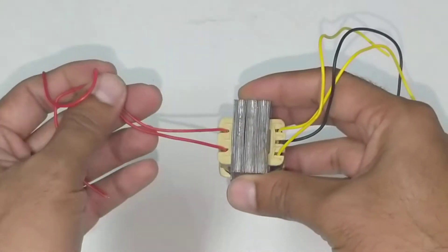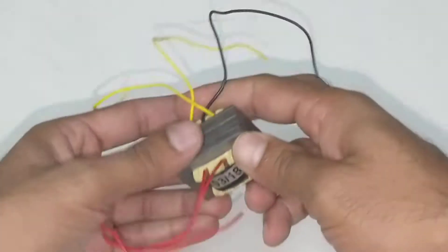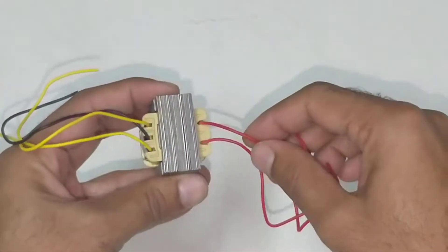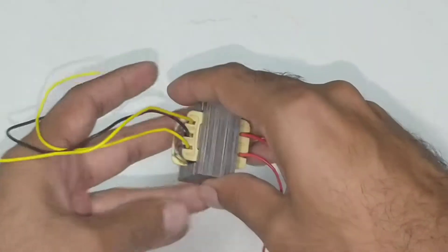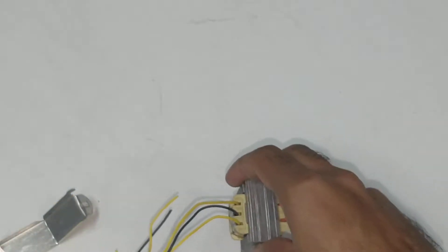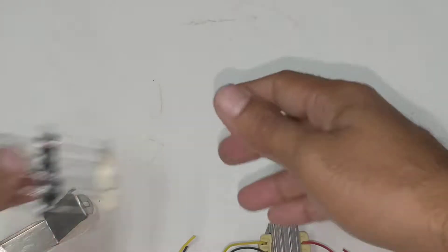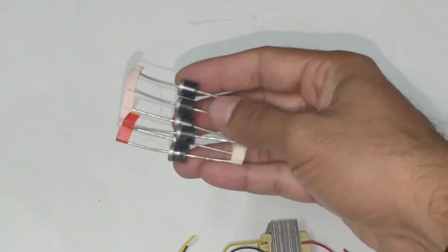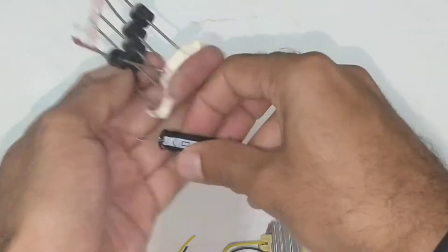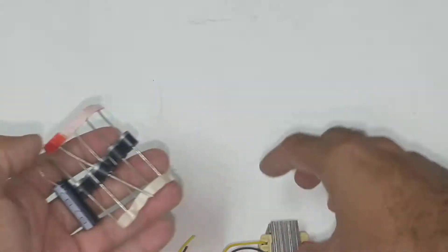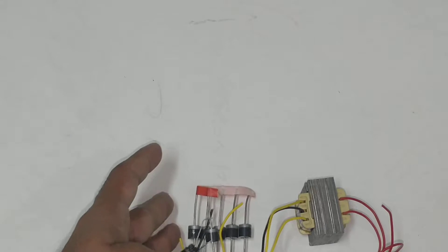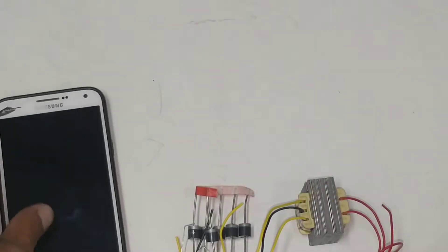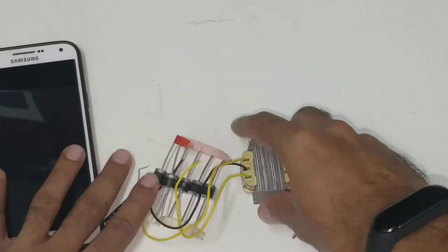One important thing is for this transformer you have to give AC voltage so that you get AC output. To rectify this, you need components like this - this is called a diode and this is called a capacitor. You need to put all these things if you want to use DC and charge this mobile phone.